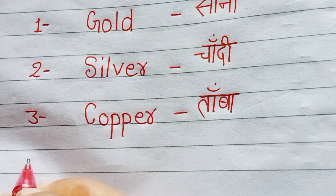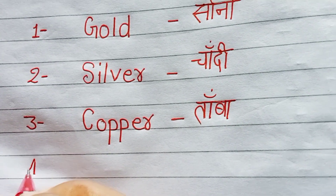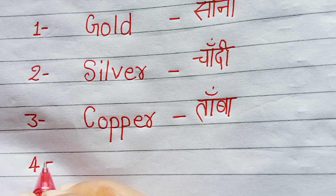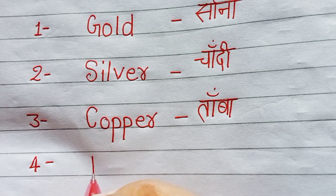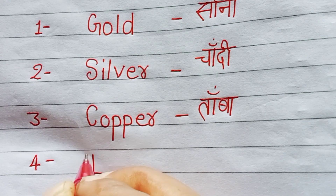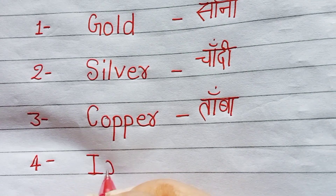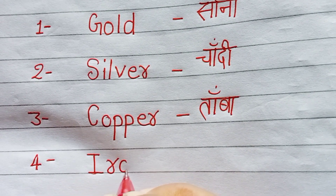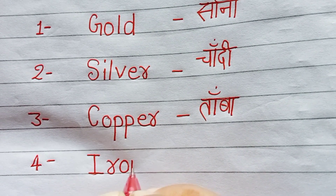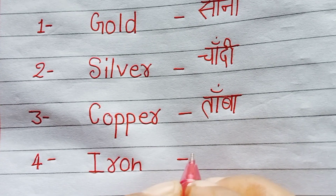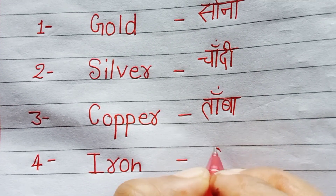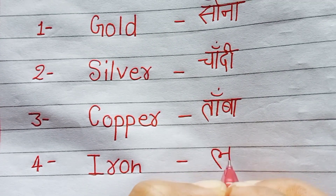4th number is Iron. I, R, O, N. Iron. Iron means Loha.